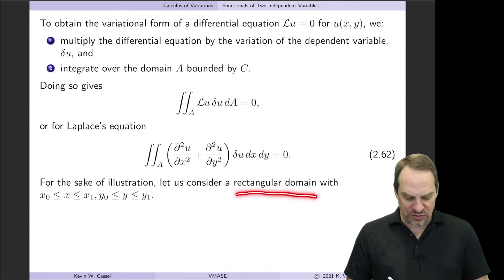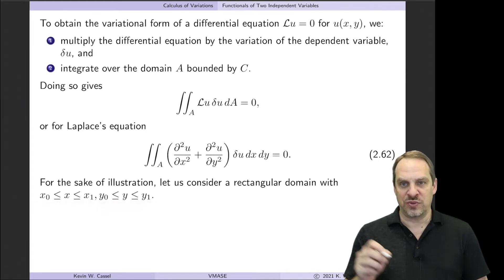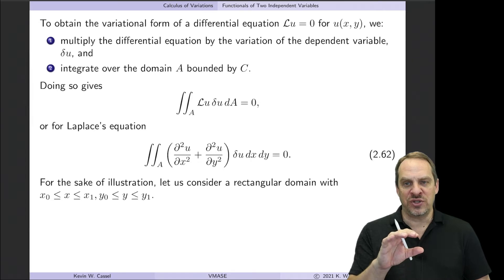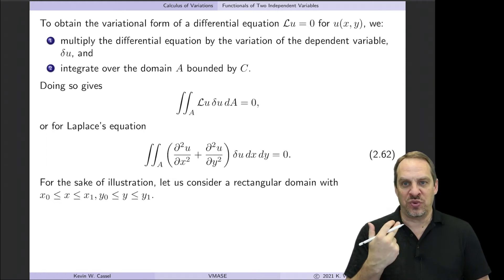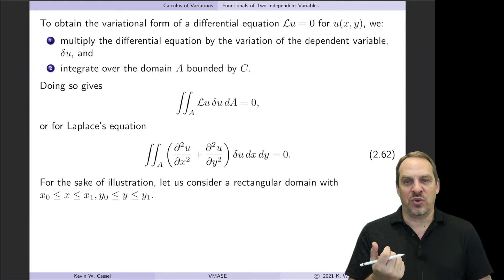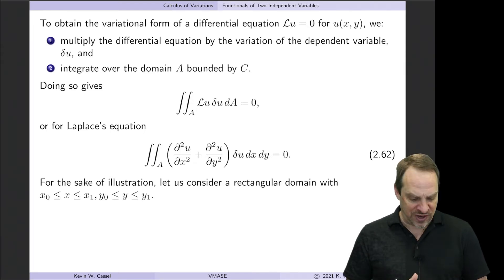So let's just imagine that we have a rectangular domain from x₀ to x₁ and y₀ to y₁. So we have a rectangular domain in which we have Laplace's equation being the governing equation, and we want to get the equivalent variational form of Laplace's equation. In the end, this is going to help us with one of the themes that I mentioned way back at the beginning of Chapter 1, and that is that the variational form often gives us additional insight and intuition into the physics.